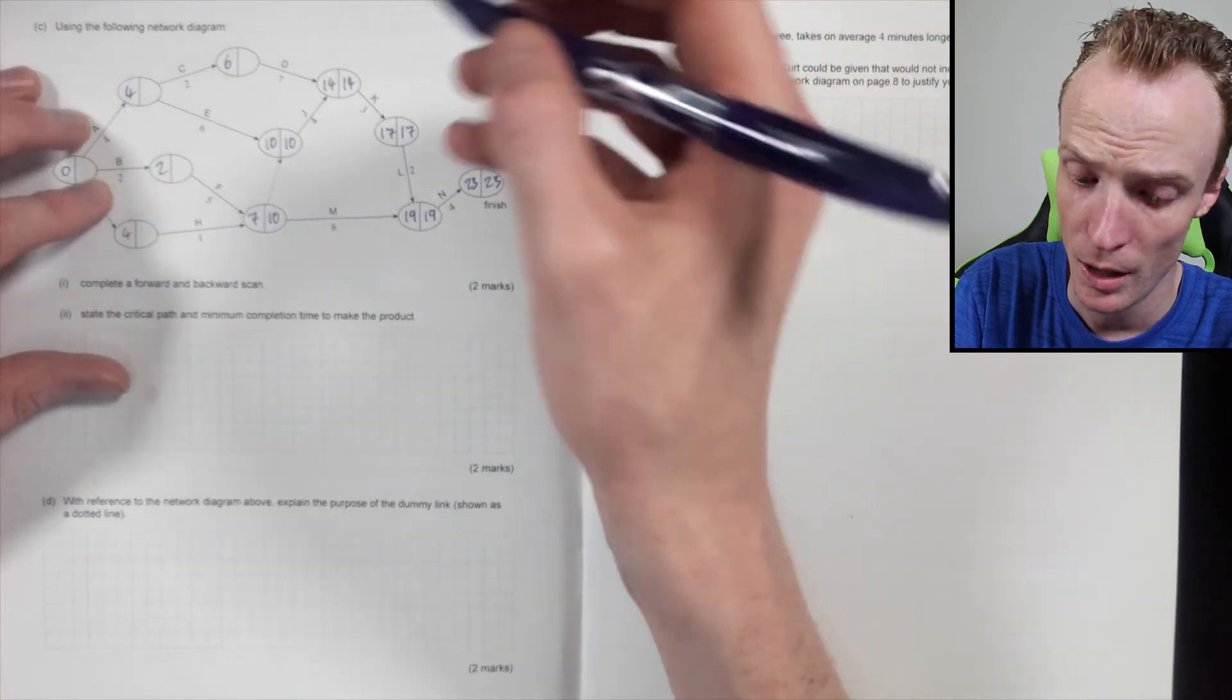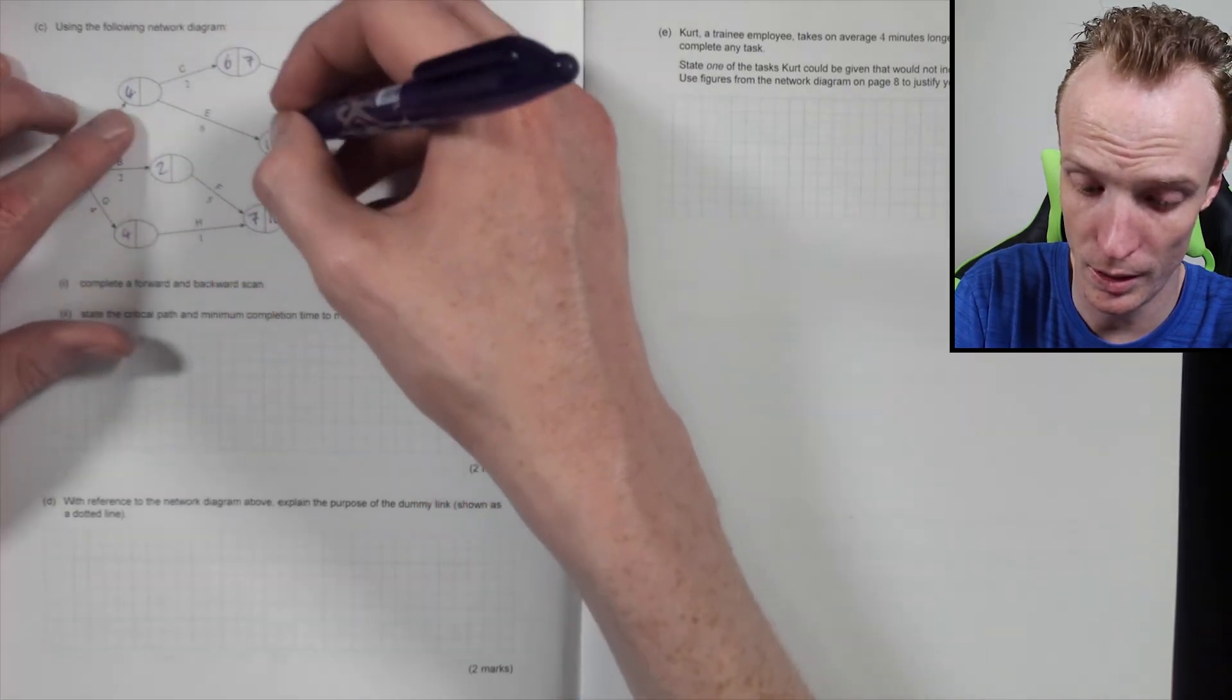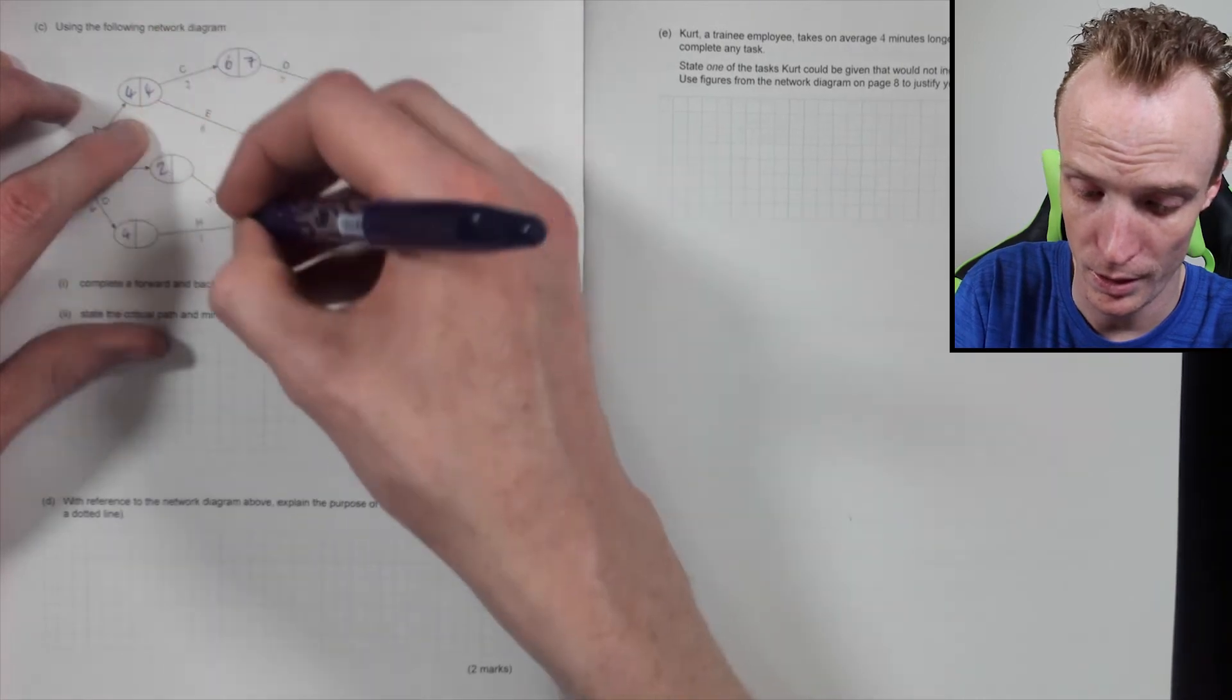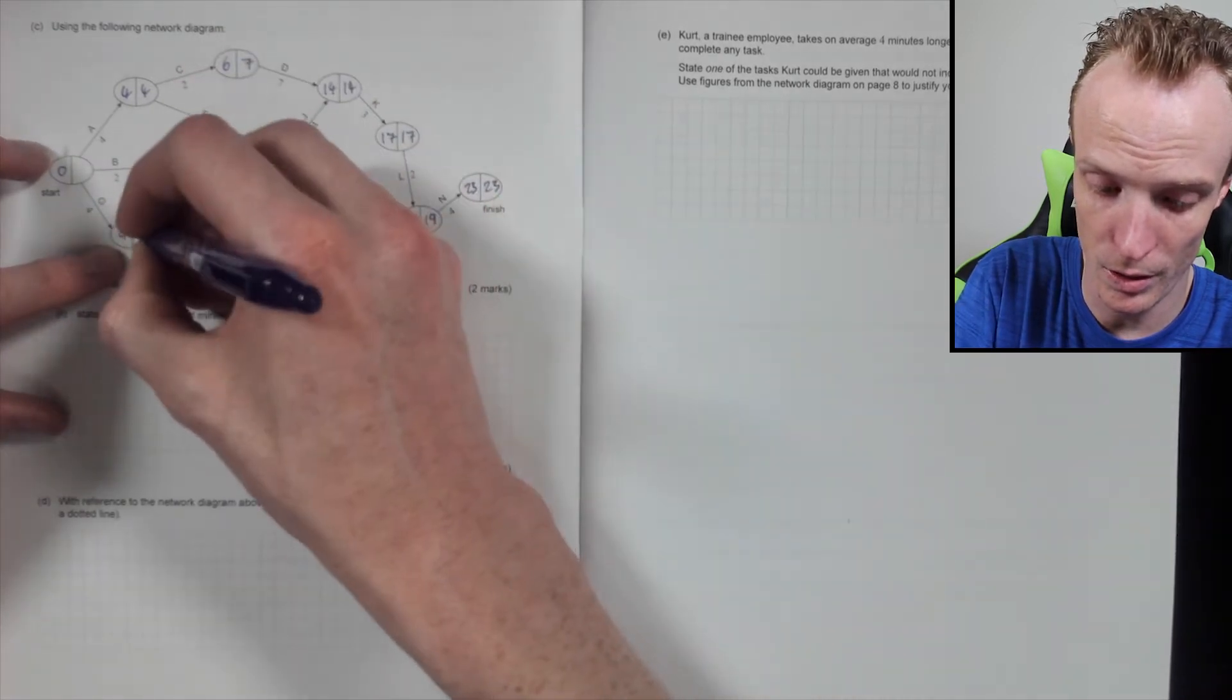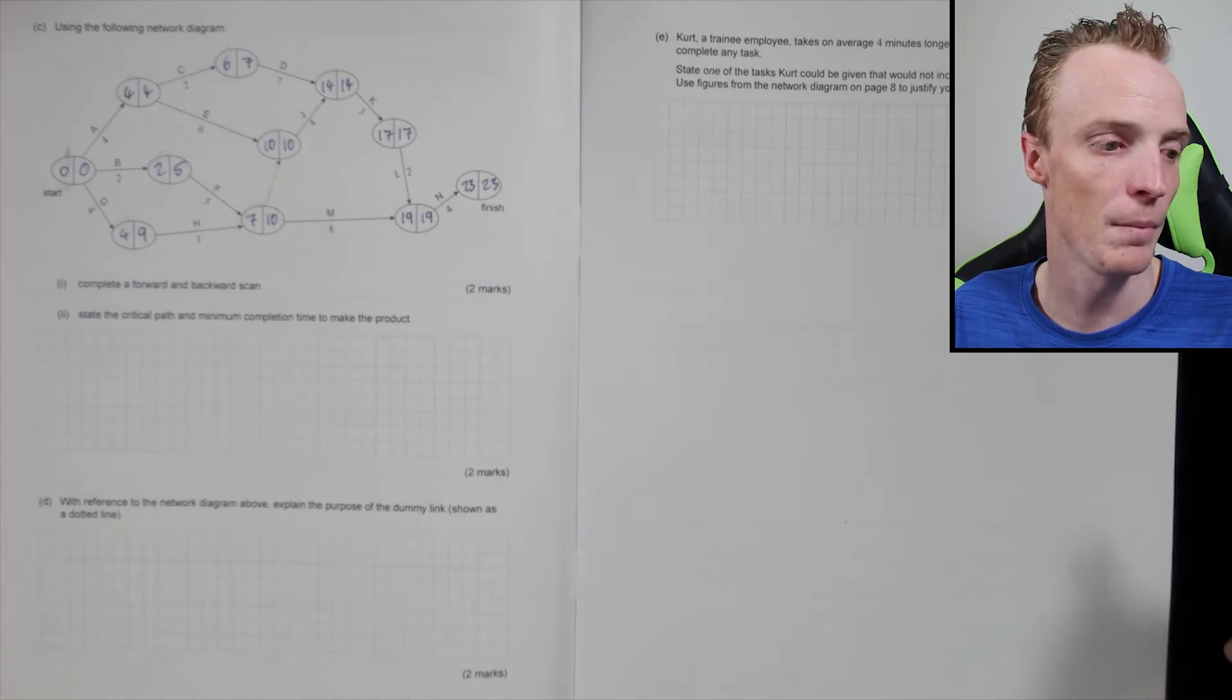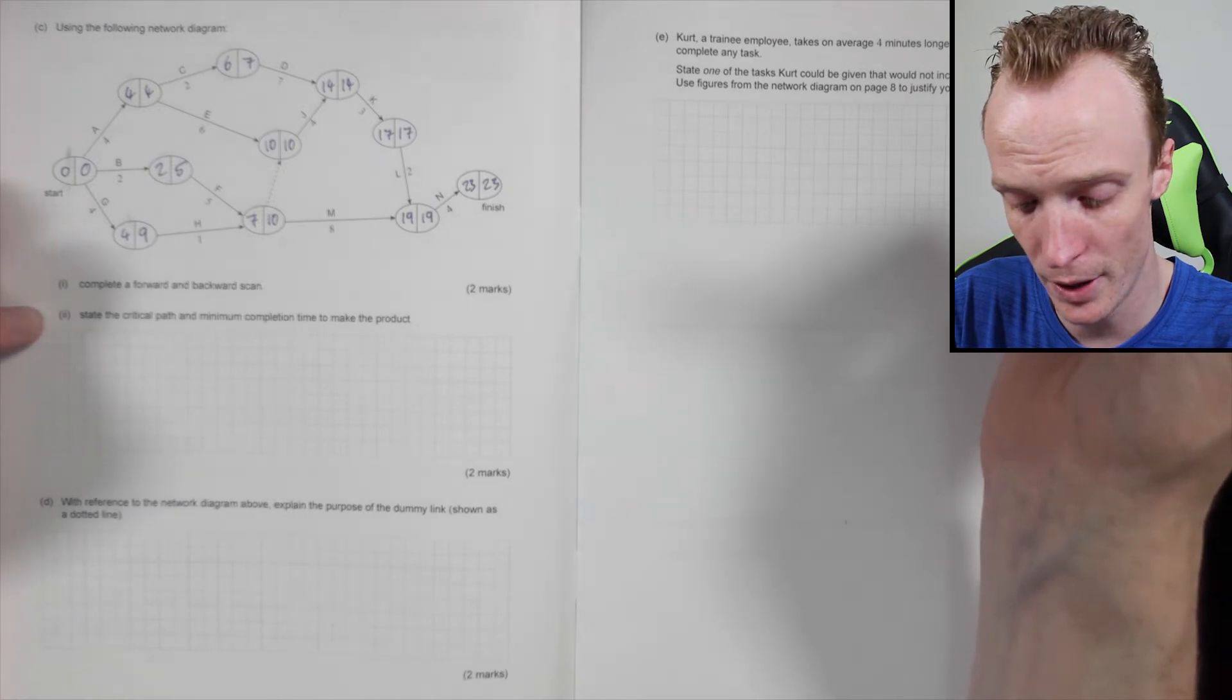So 23 take 4 will be 19. 19 take 2 will be 17. 17 take 3 will be 14. 14 take 4 will be 10, and then that'll be 10 going this way. 19 take 8 will be 11, so I'll be looking for the 10 value just in here. 14 take 7 will be 7. 10 take 6 will be 4. 7 take 2 is 5, so it'll be the 4 there. 10 take 5 will be 5. 10 take 1 will be 9, and then that'll be zero.